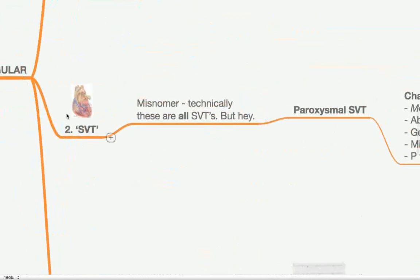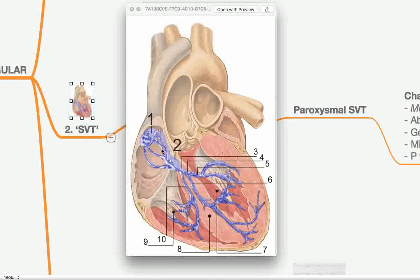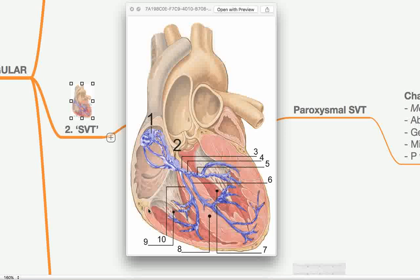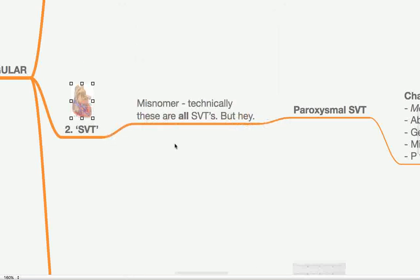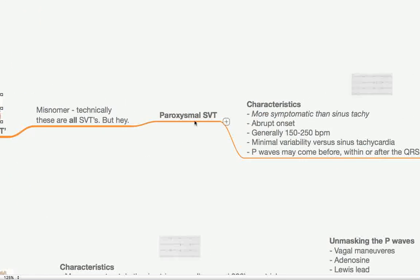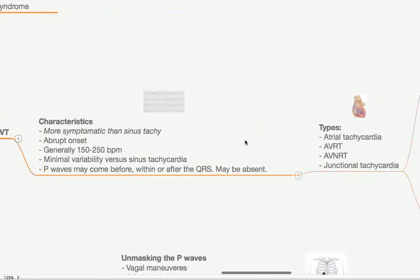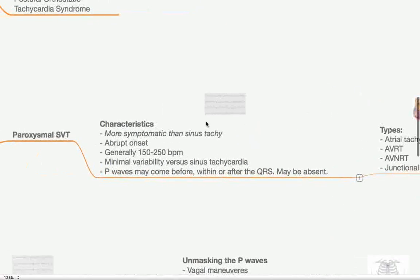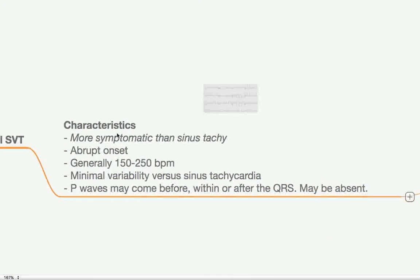So second of all, SVT. Now, this is a bit of a misnomer, but we do know what we mean when we say the word SVT to each other. Just to be clear, all of the rhythms that we're talking about today are indeed SVTs, i.e. they are supraventricular or they occur above the ventricles. So actually a more accurate way of describing this group of arrhythmias would be paroxysmal SVT. And this is an umbrella term for a specific group of rhythms. But before we get onto those groups, let's talk about some of the characteristics. It tends to be much more symptomatic than sinus tachycardia. People can actually feel the palpitations and they really feel the effects of having this sort of rhythm tends to come on quite abruptly, often very inappropriately as well, when they're not doing the type of thing that would warrant that sort of heart rate. Generally, 150 to 250 beats a minute, minimal variability versus sinus tachycardia, a bag of fluid isn't really going to reduce this. And then finally, P waves may come before, within, or after the QRS.